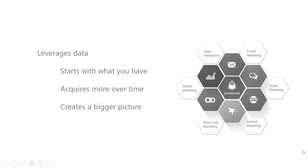What we're talking about is the ability to leverage your data. Your data is whatever you have — people in your databases, information about those people — and that's where marketing automation really comes into play. You're going to be able to leverage that information to send the right message to the right people. Over time, as you utilize marketing automation, it's going to start to acquire more data about the people you're reaching.